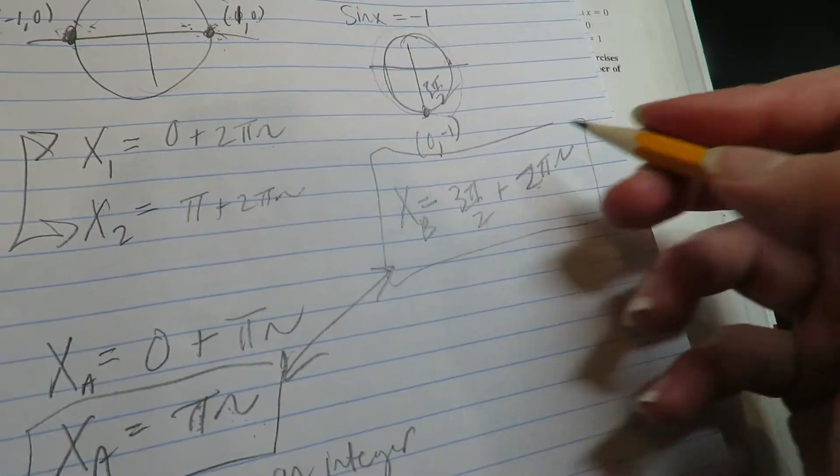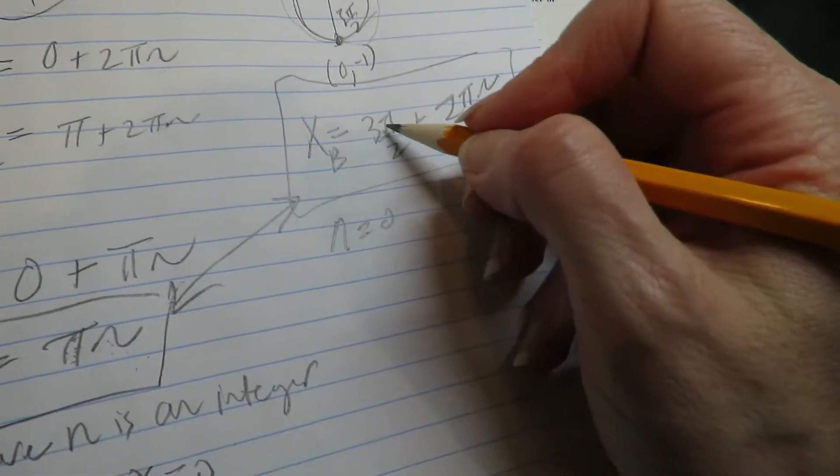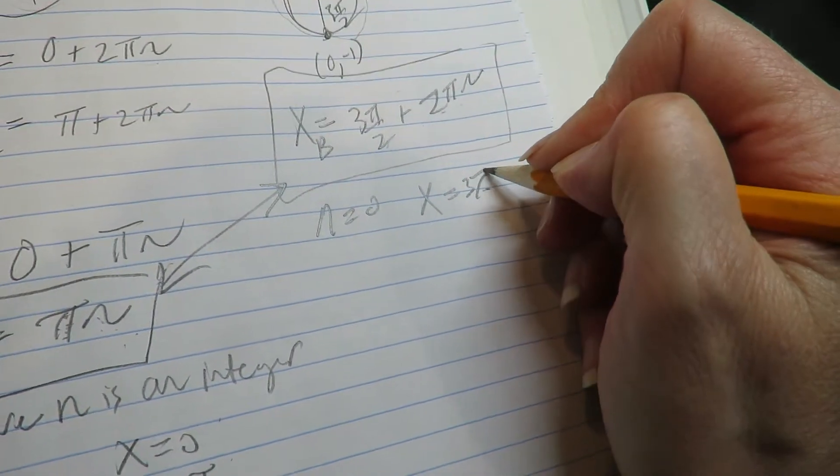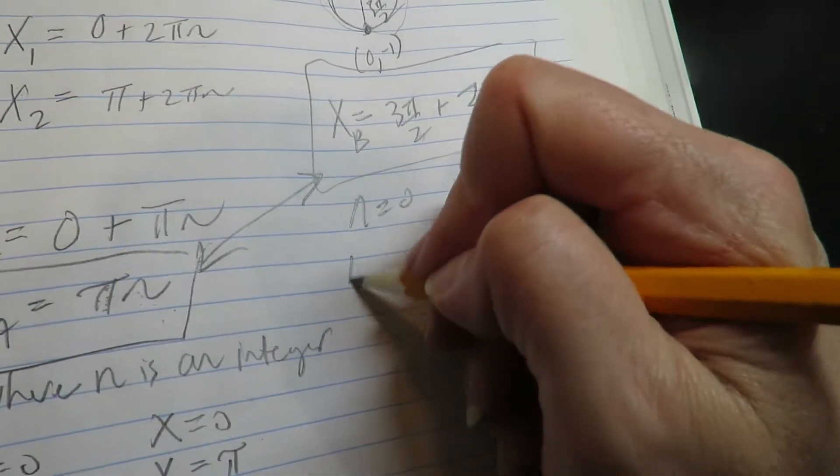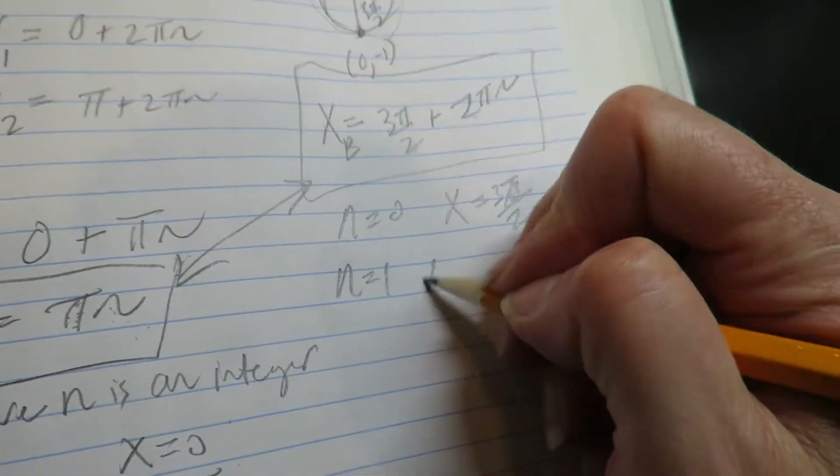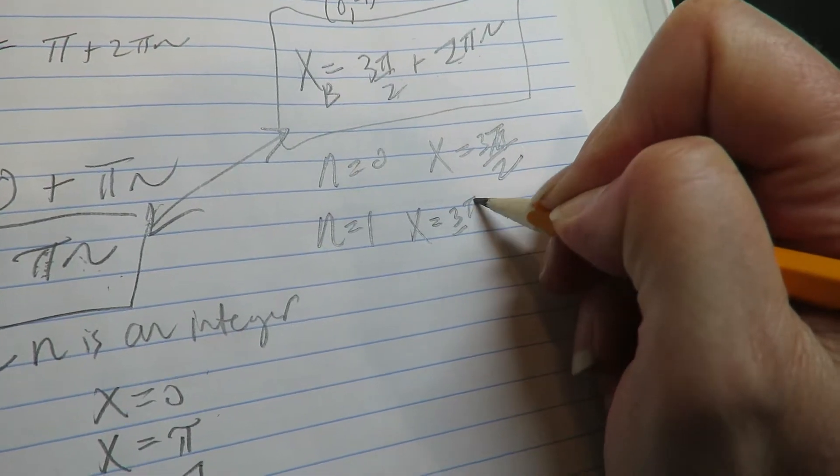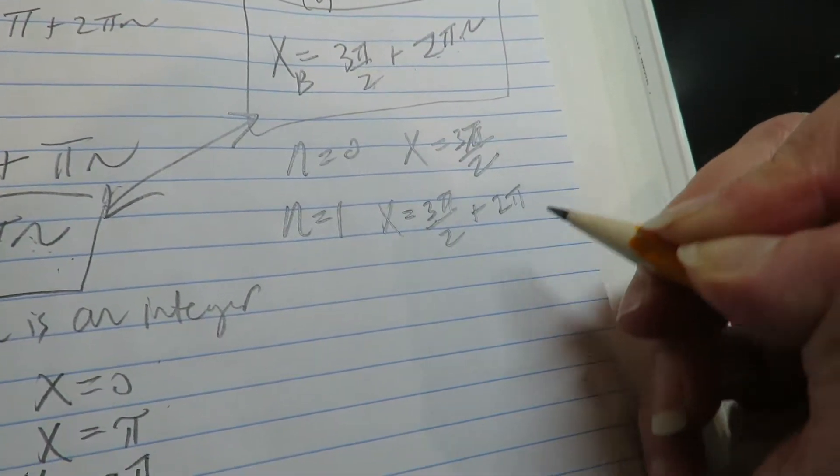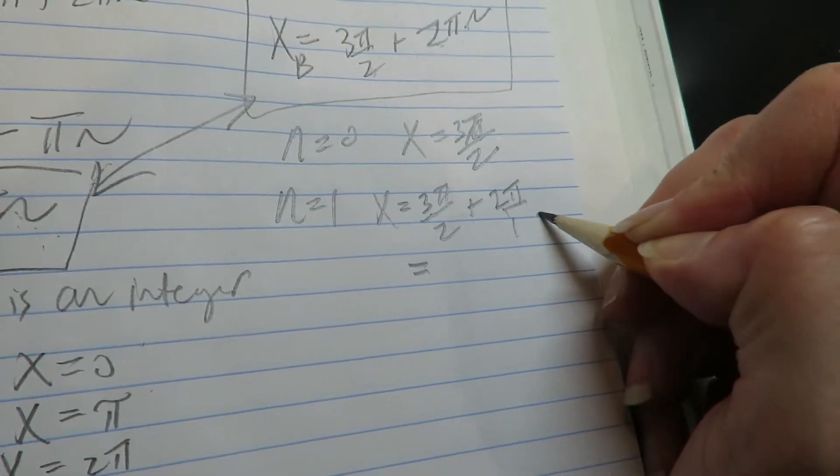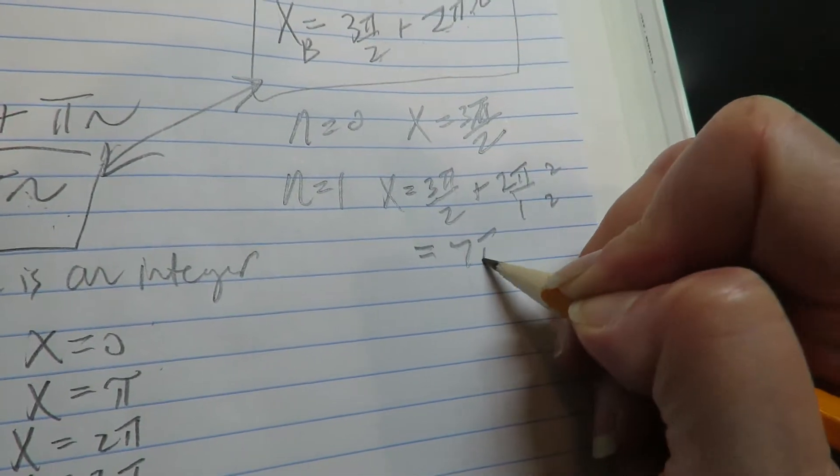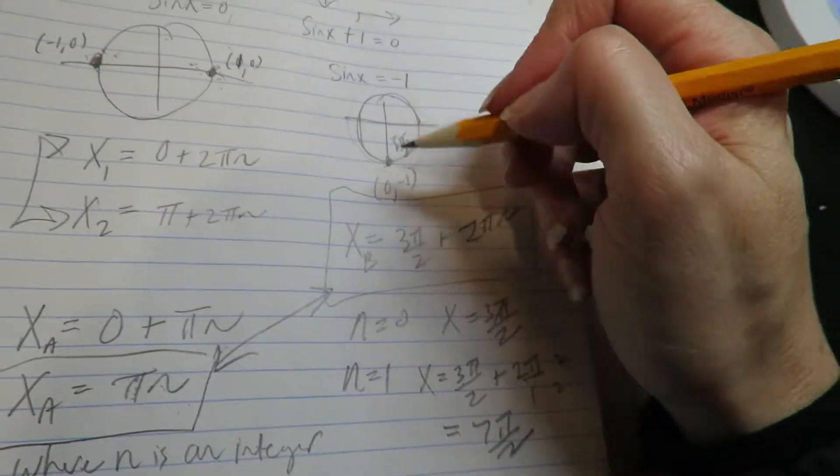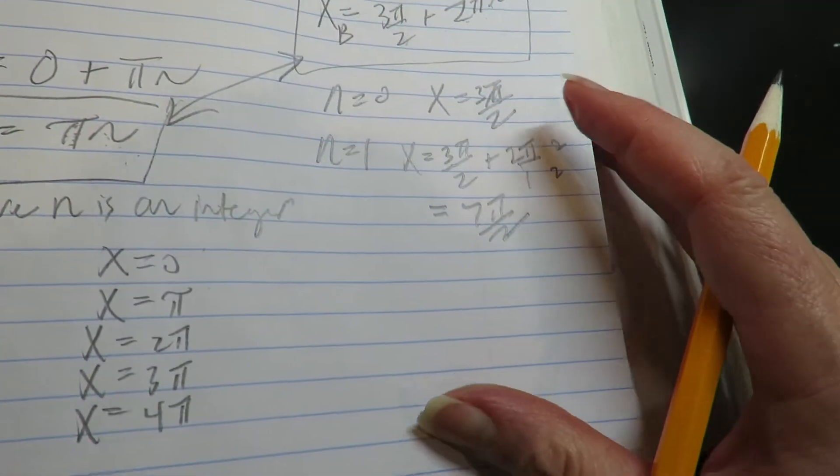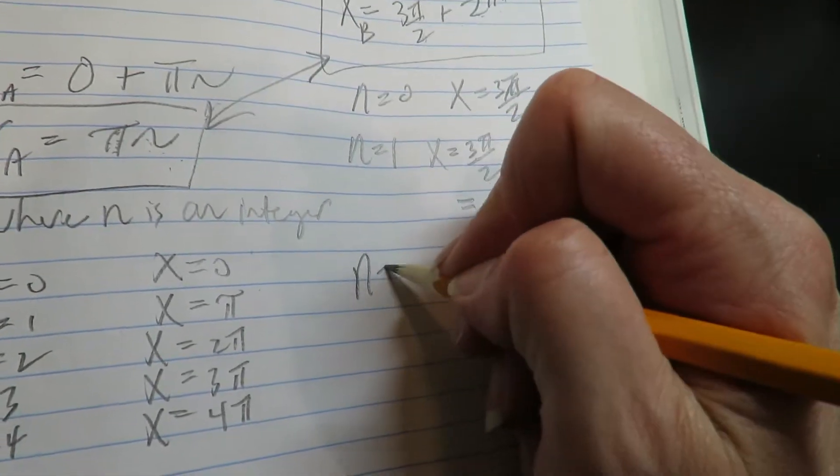So the idea is that when n is equal to zero, this is three pi over two plus zero. When n is equal to one, this is three pi over two plus two pi times one. All right, so we start with three pi over two being the first one. The next one will be seven pi over two. I mean, this just goes on forever.